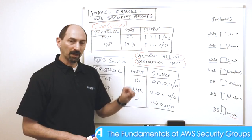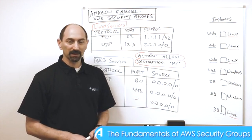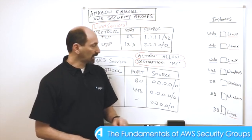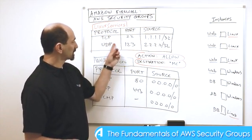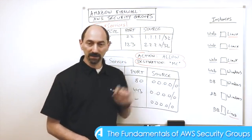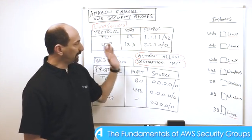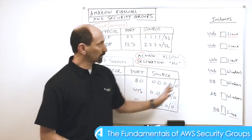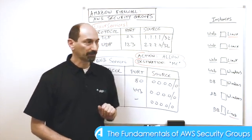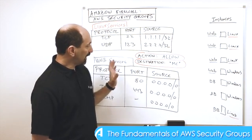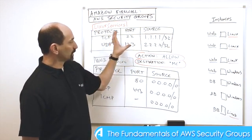However, when you're in the Amazon environment, Amazon has done something we're less used to: you can actually apply multiple security groups to a single instance. So you have a many-to-many relationship — multiple security groups associated with multiple instances — and an instance can inherit the rules from all the security groups associated with it.